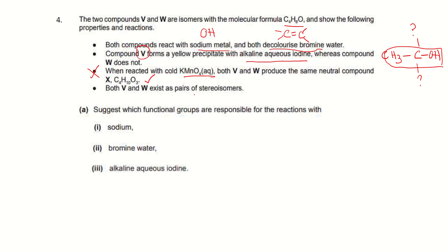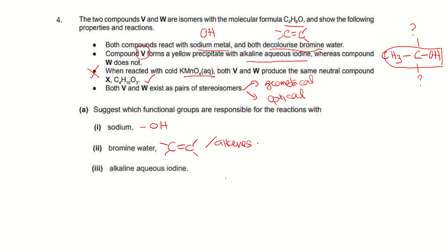Compound V forms a yellow precipitate with alkaline aqueous iodine whereas W does not. For a compound with an OH group to react with alkaline aqueous iodine, a methyl group directly attached to a carbon bearing OH must be present in the structure. That is the requirement for V. Both V and W exist as a pair of stereoisomers.